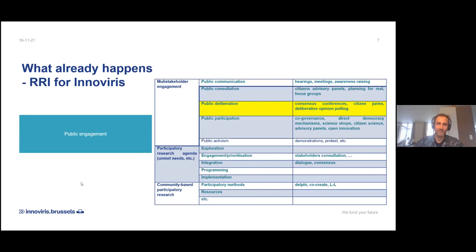What I will do is focus, as required in light of this webinar, on public engagement. So what is public engagement about in the light of responsible research and innovation? We've identified three categories: multi-stakeholder engagement, participatory research agenda setting, and community-based participatory research.